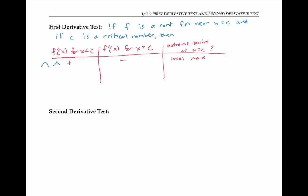If on the other hand, f prime of x is negative for x less than C and positive for x greater than C, then our function looks something like this near x equals C, and so we have a local min at x equals C. If our first derivative is positive on both sides of C, or negative on both sides of C, then we do not have a local extreme point at all at x equals C. Instead, our graph might look something like this, or maybe like this.